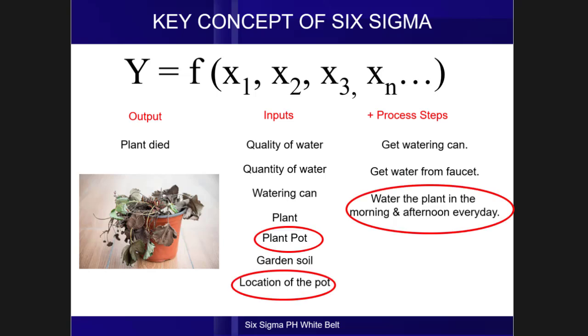First, the plant pot. Upon inspection, we found out that the plant pot doesn't have a hole, which will act as a drainage. Second is the location of the pot. We placed the pot inside the house, but we found out that the plant needs at least two hours of direct sunlight.